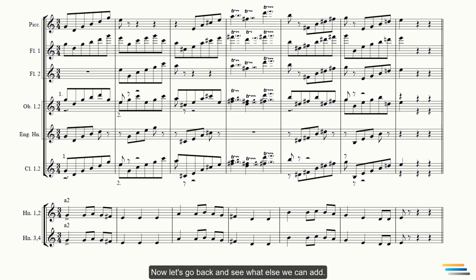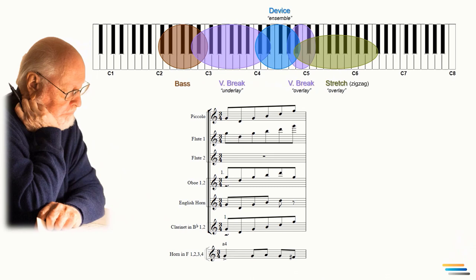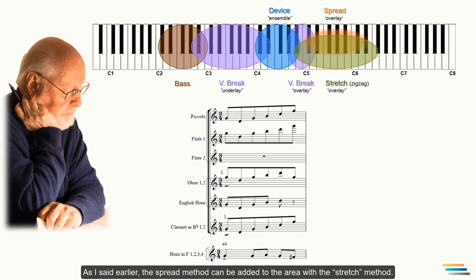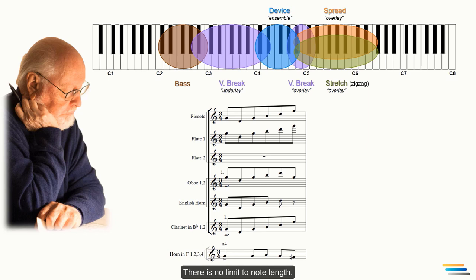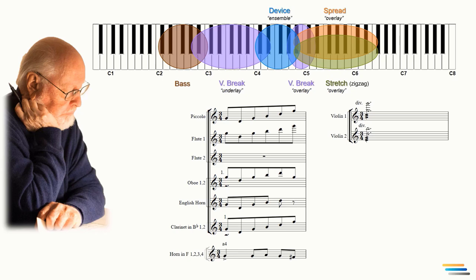Now, let's go back and see what else we can add. As I said earlier, the spread method can be added to the area with the stretch method. Since each of them has a different function, they will not create a conflict. As you know, according to the rules of the spread method, a chord must be used only once within the bar. There is no limit to note lengths. It is known that only the first and second violins are among the remaining instruments. So let's turn the G major chord into four voices and give it to the strings. That's all. Let's listen.